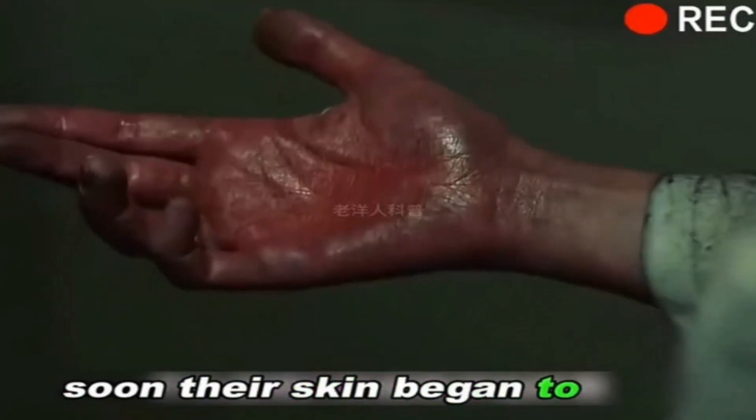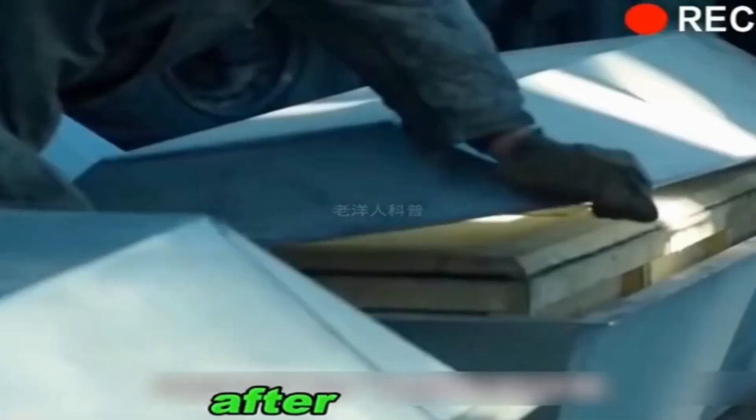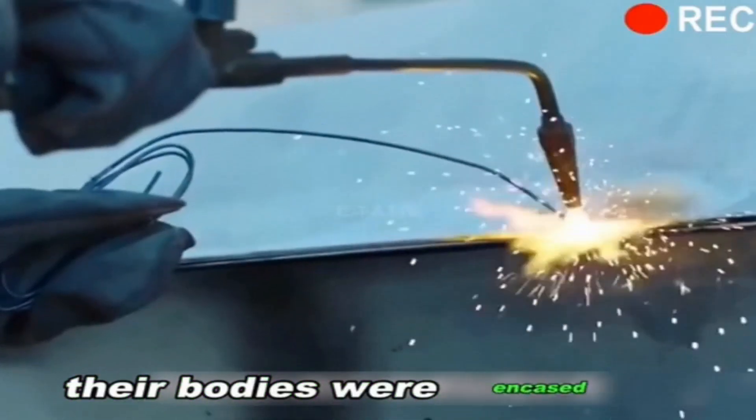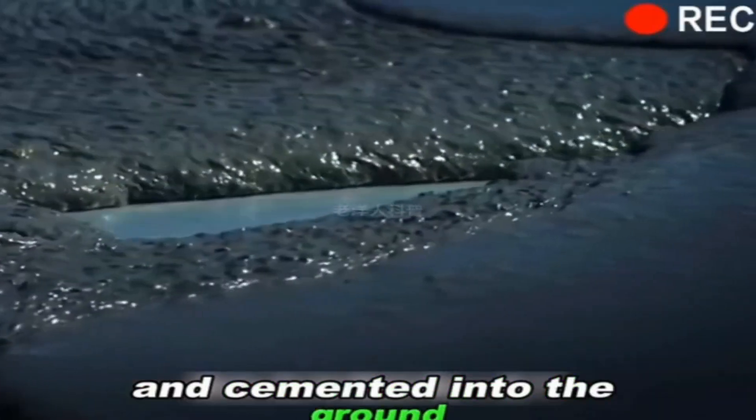Those who suffered from severe radiation sickness soon had their skin begin to peel off. Their entire bodies were covered in searing pain. After they died, their bodies were encased in lead sheets and cemented into the ground.